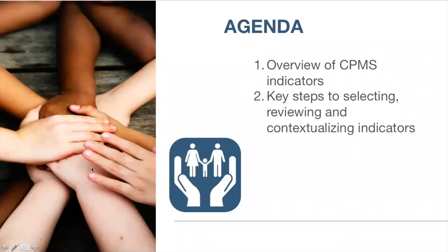Hi, everybody. Thank you for joining. My name is Selena Jensen, and I'm the focal point for the Assessment, Measurement, and Evidence working group of the Alliance for Child Protection in Humanitarian Action. Thank you for tuning into this instructional video. Today we're going to be discussing the selection, review, and contextualization of Child Protection Minimum Standards indicators.